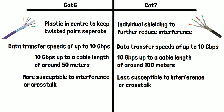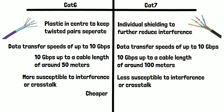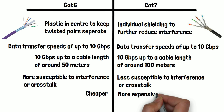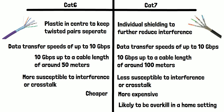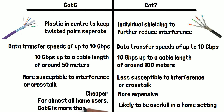Finally, let's look at cost. CAT6 cables are generally less expensive than CAT7 cables due to their lower specifications and performance. However, CAT7 cables are likely to be overkill in a home setting and are usually used in an office or data center where there is likely to be high interference and extremely long cables are needed. For almost all home users, CAT6 is more than capable.